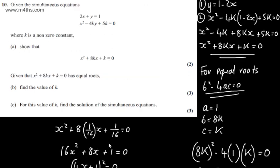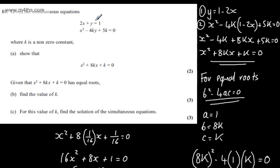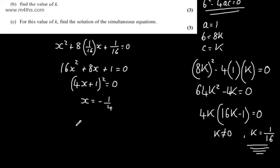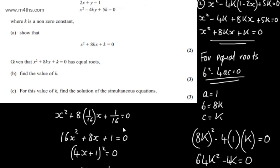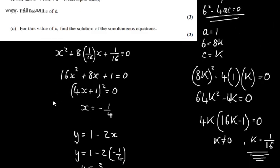All I need to do now is find y and I can simply sub this into equation 1 either in this form or this form right here. So we know that y is equal to 1 minus 2 lots of x so subbing in y will be equal to 1 minus 2 lots of minus 1 quarter and that will give us now y is equal to 3 over 2. So we've gone ahead and solved the simultaneous equations using the value of k.